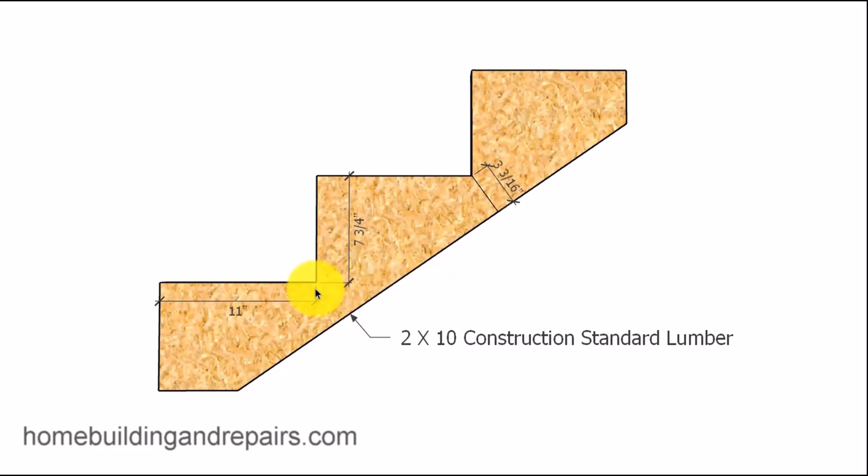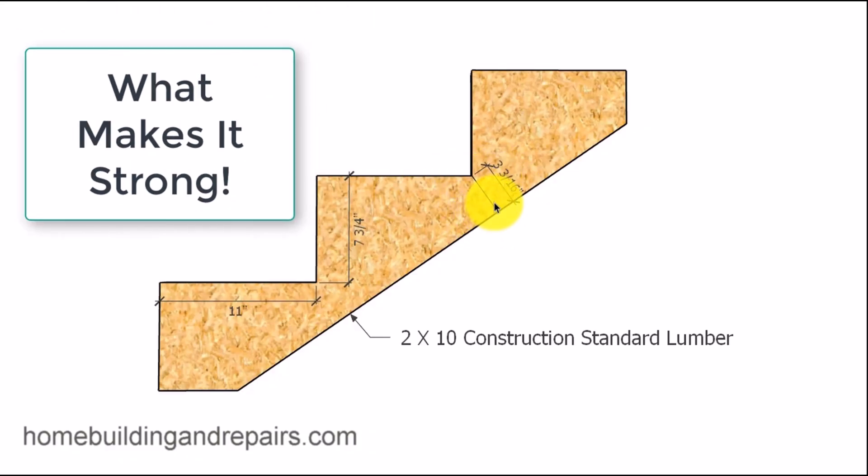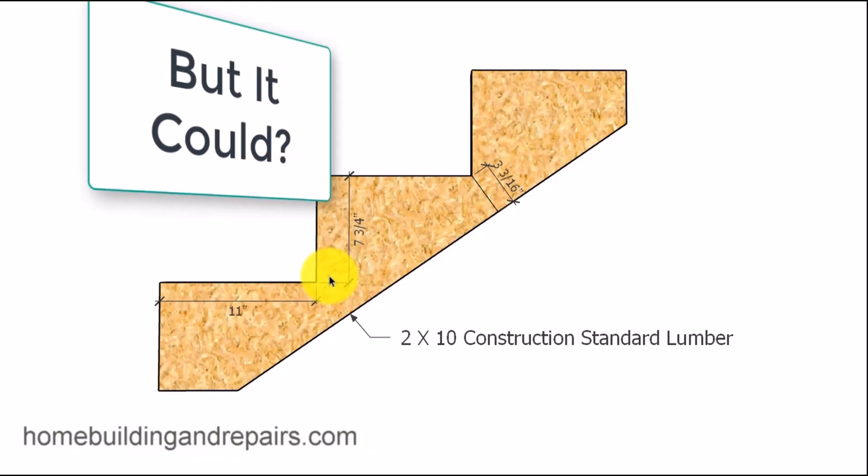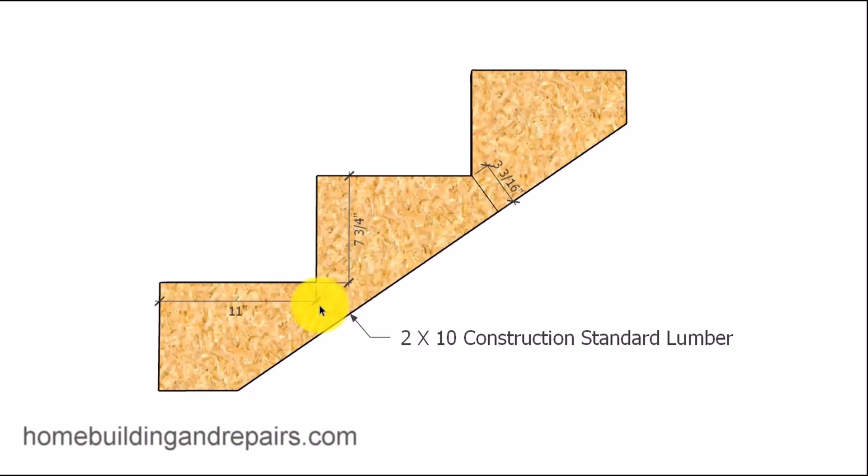Now, here's a 2x10 stair stringer with a 7.75 inch riser and an 11 inch tread. And it has about a 3 and an eighth inch, 3 and a quarter inch. We used to call this the meat of the stair stringer. You know, this isn't very much. This is less than a 2x4. And I'm not suggesting that this set of stairs will ever fall apart. And of course, you could always nail some support boards underneath it, like some wall framing studs. Or you could add a 2x4 or a 2x6 to the side of it to reinforce it.